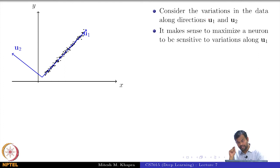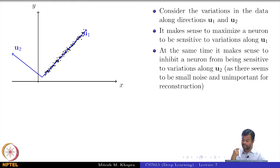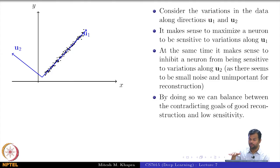It makes sense to maximize a neuron to be sensitive to variations along u_1, but it does not make sense to make the neuron sensitive to variations along u_2. By doing so, we can balance the two conditions. One condition was trying to capture all the important variations, but do it only for the dimensions which really matter. The other condition says do not capture important variations, but do it only for those dimensions which do not matter. It is the same as principal component analysis. You try to capture the variations across the important dimensions, but not across the non-important dimensions.